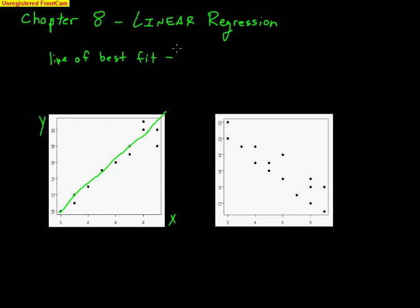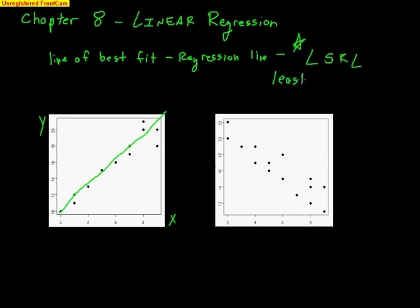Some people call it a linear regression or a regression line, and why we call it a regression line is really, really important. The official statistical name is called a least squares regression line. I need to explain why it has that name, because every part — least, squares, regression, line — has important meaning. Obviously 'line' makes sense because it's a line. Let's focus on why it's called a least squares regression line.